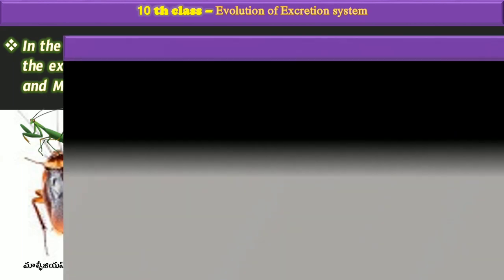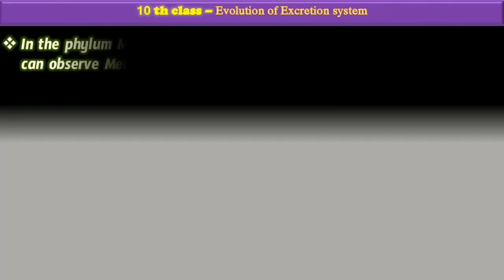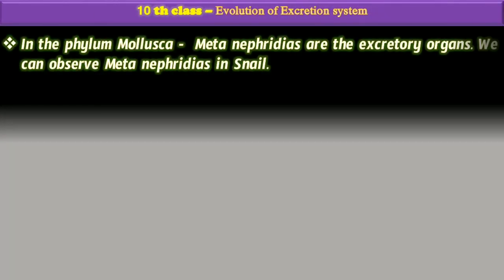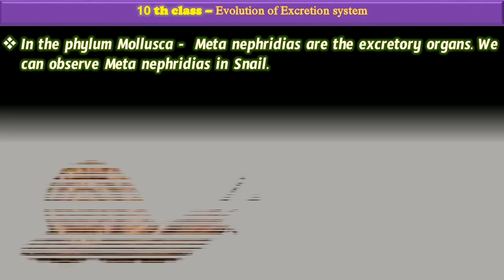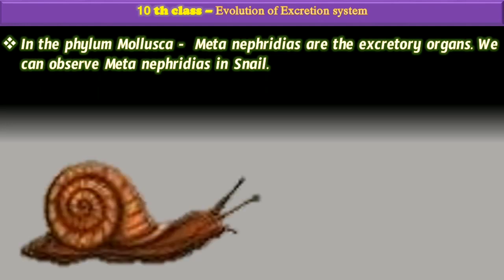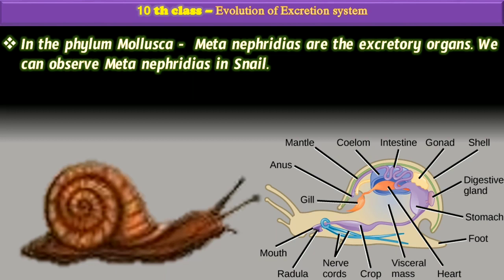In the phylum Mollusca, metanephridia are the excretory organs. We can observe metanephridia in snails and other organisms belonging to Mollusca, which show metanephridia as their excretory organs.